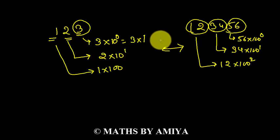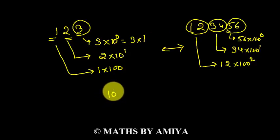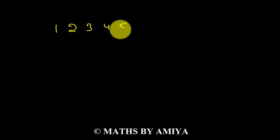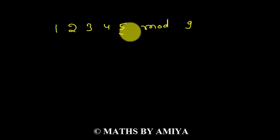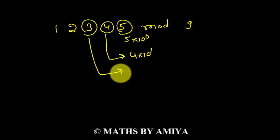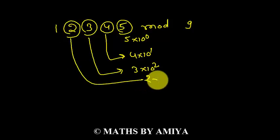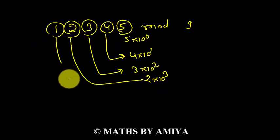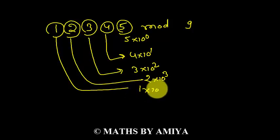I hope that is clear. This is our first concept: formation of numbers. Now, check what happens when a number is divided by 10 raised to power n plus or minus 1. Say 12345 divided by 9 — what would be the remainder? We can write: 5 into 10 raised to power 0, plus 4 into 10 raised to power 1, plus 3 into 10 squared, plus 2 into 10 cubed, plus 1 into 10 raised to power 4.